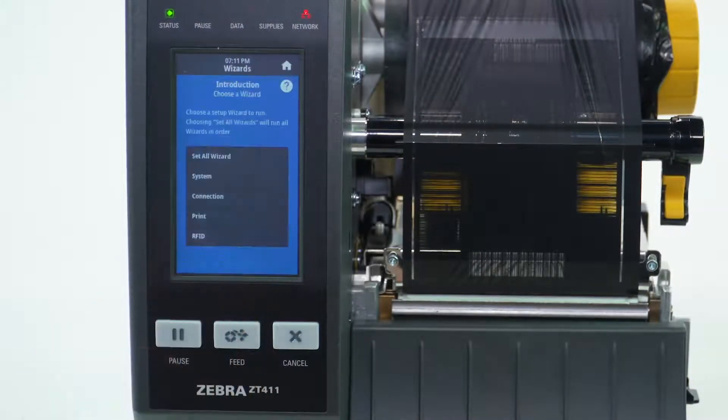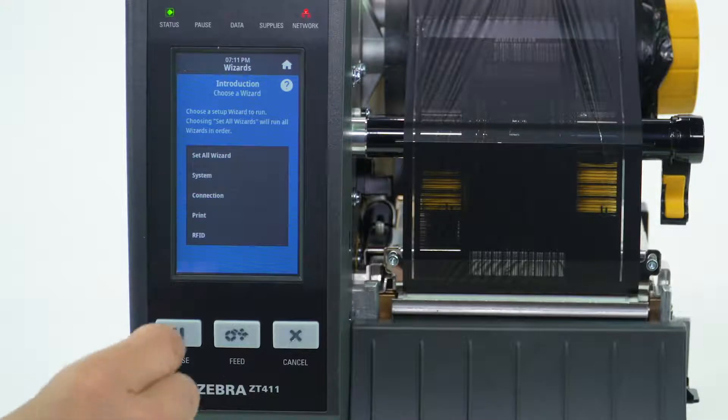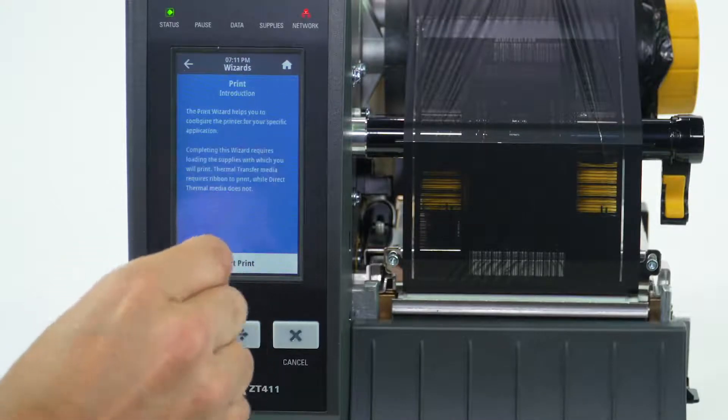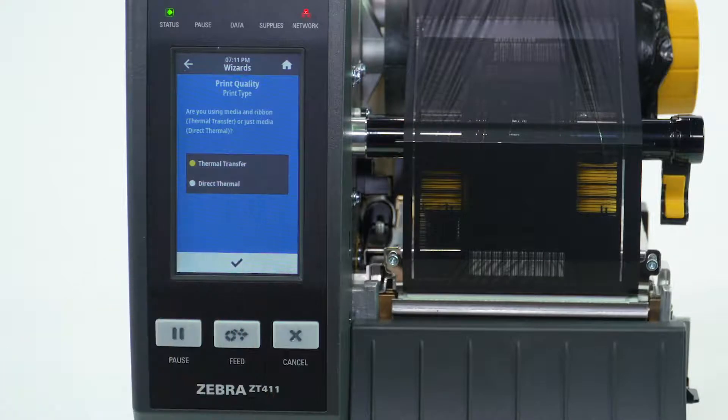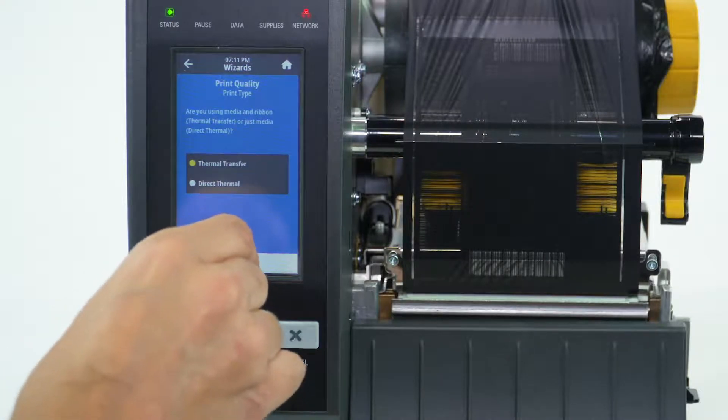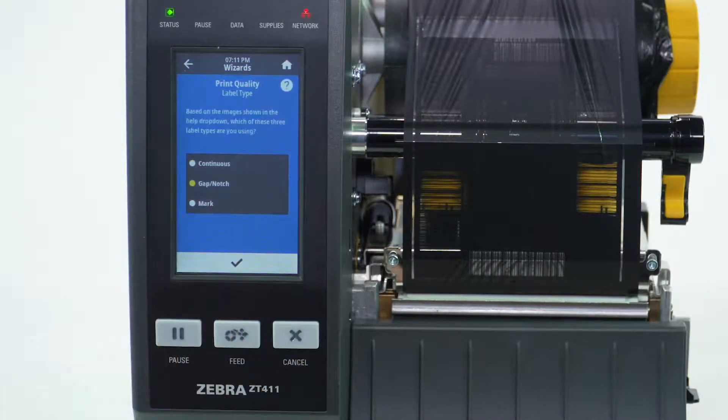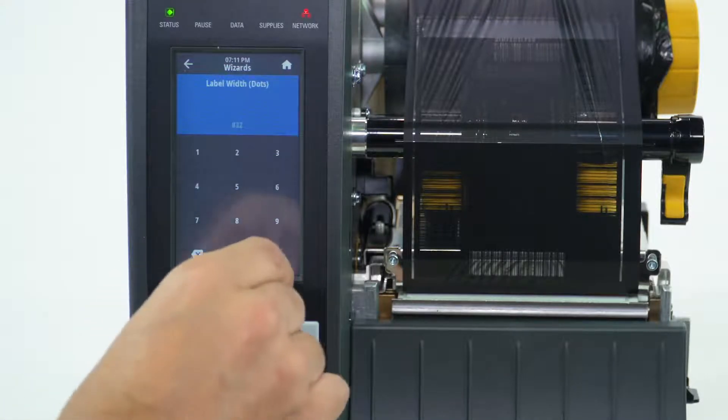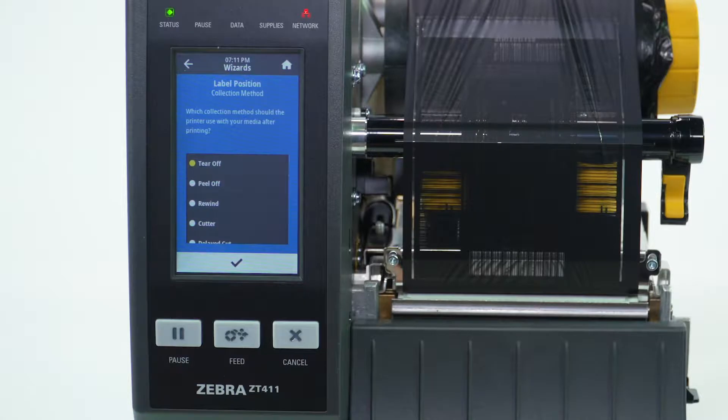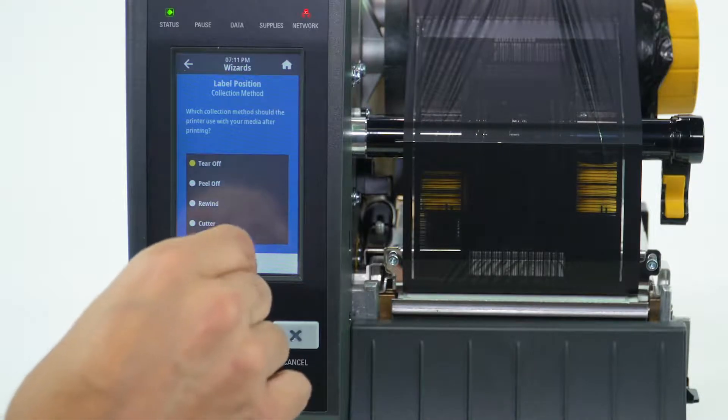Select Wizards, then select Print, and select Start Print. Select Print Type, then select Label Type. Enter Label Width and select Collection Method.